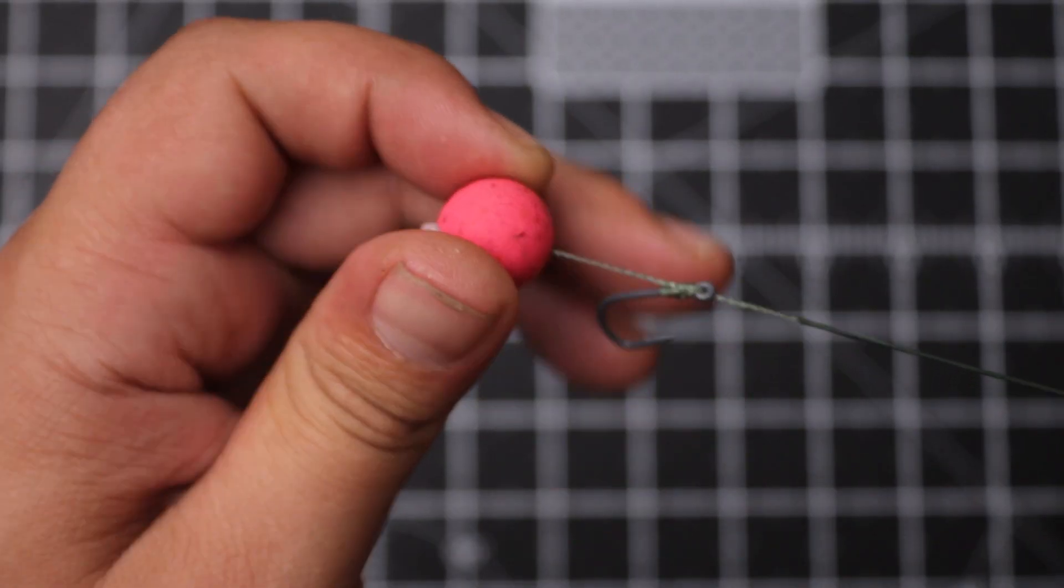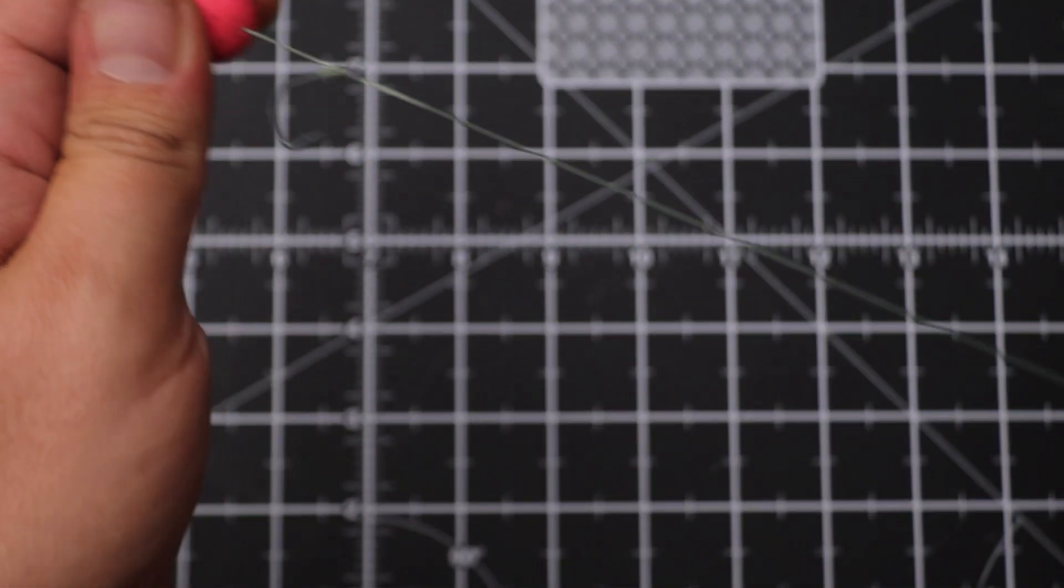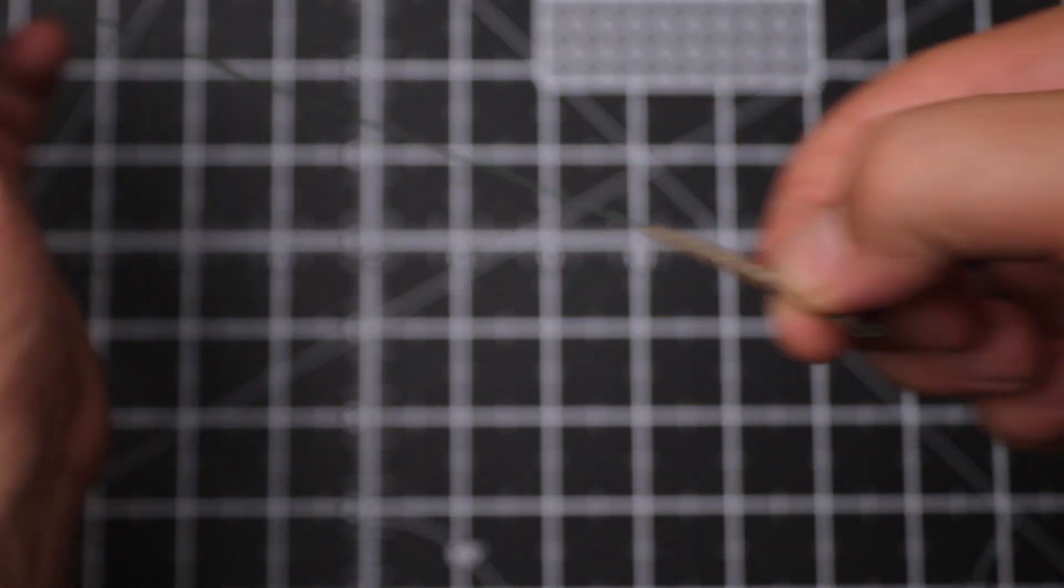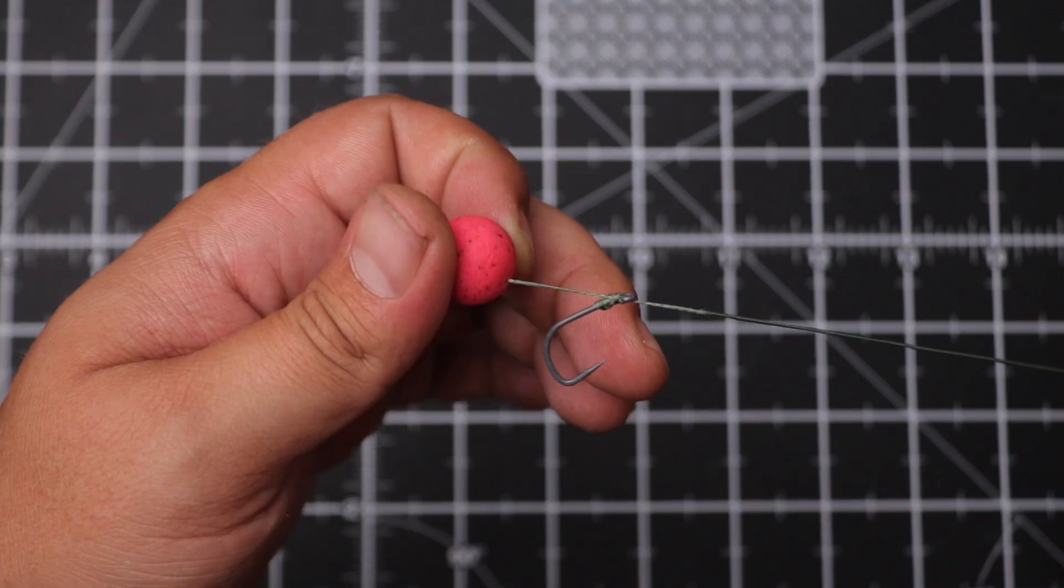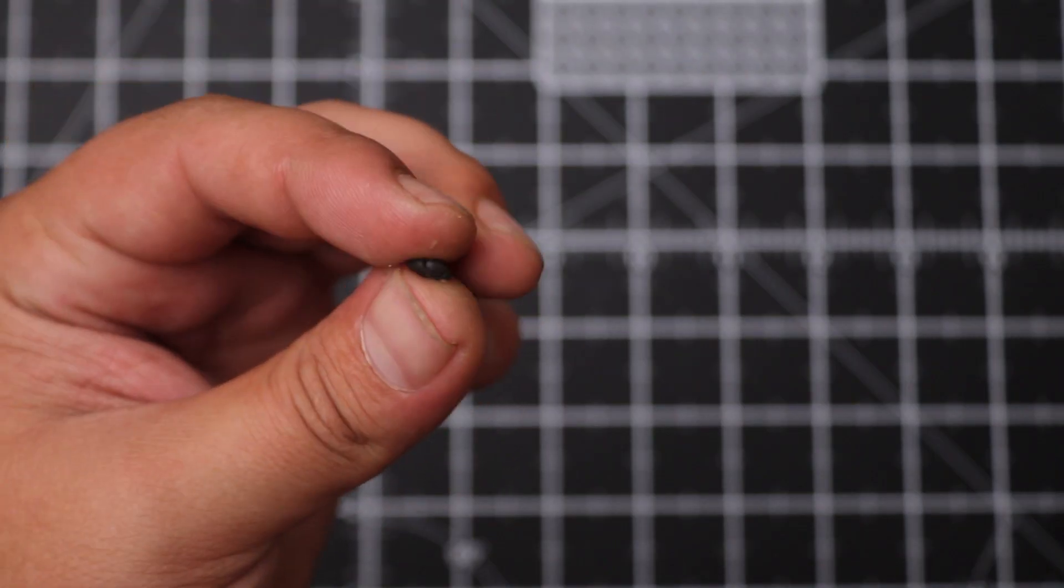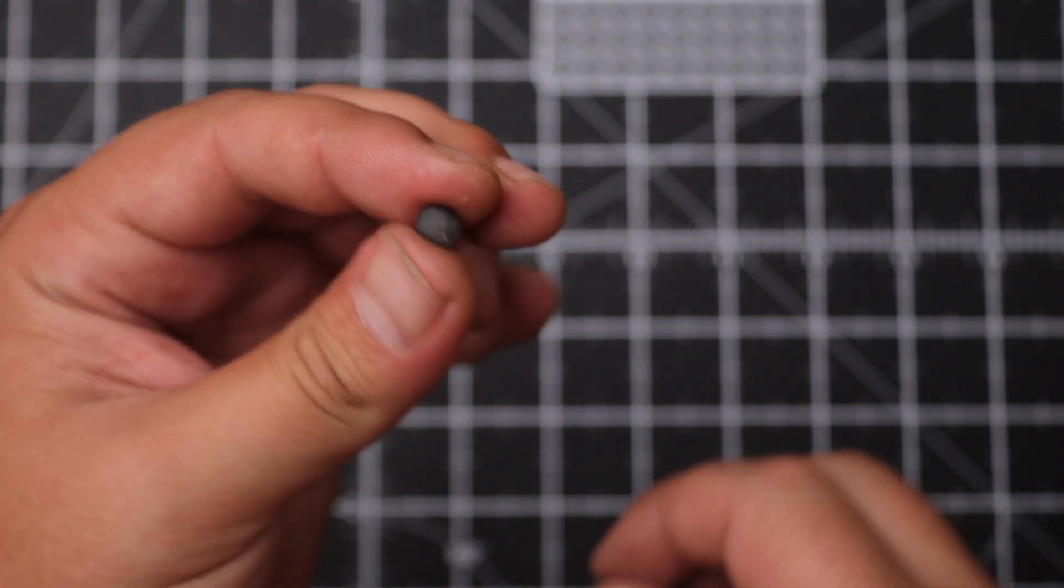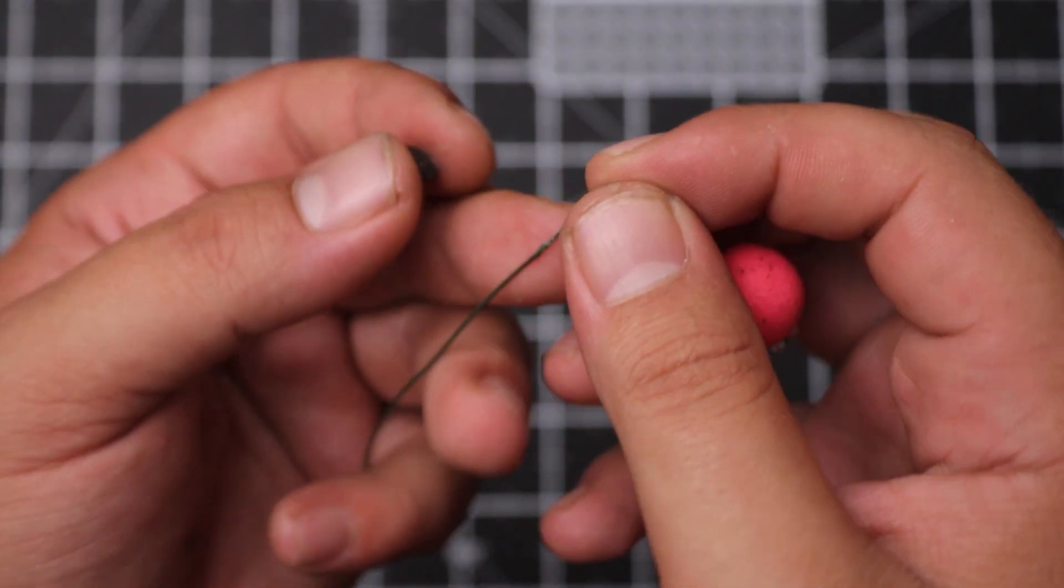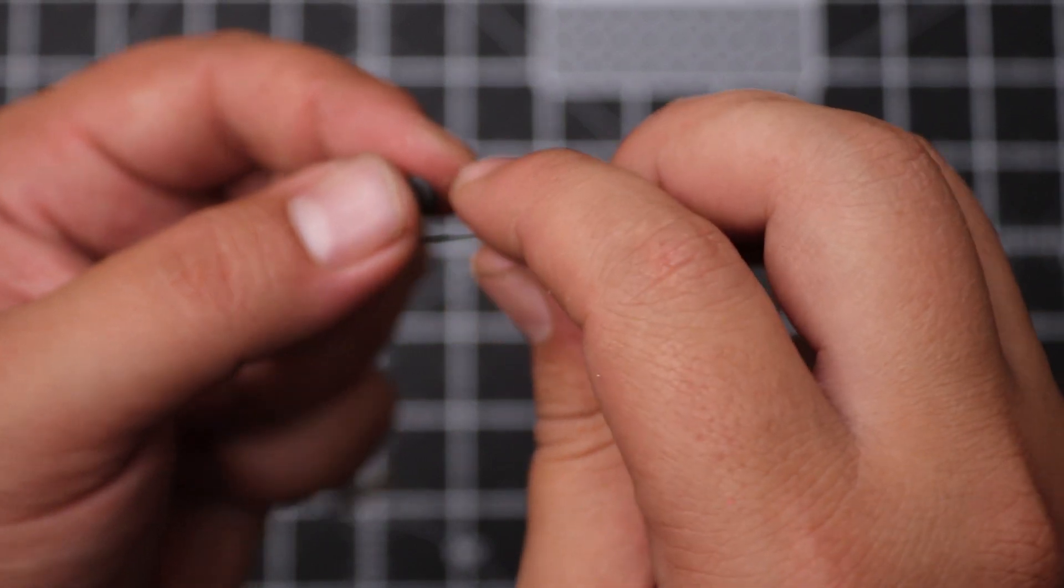And that's basically the entire rig. It's that simple. The only last step is just to simply add some tungsten putty to where the coating ends. That's going to make sure everything stays nice and flat on the bottom so that hook sets are going to be on the bottom lip almost every time.